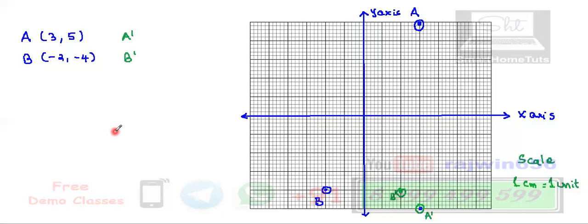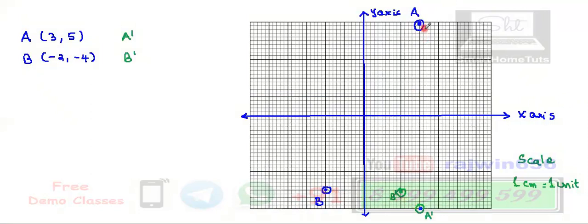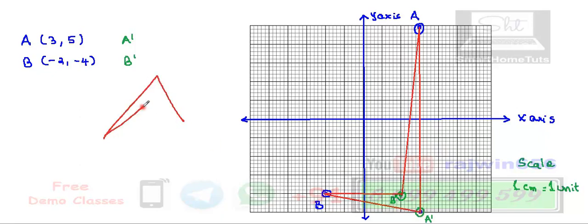Then we are supposed to join A, A dash, B, and B dash. I will join all of these points as mentioned in the question. Having joined the points A, A dash, B, and B dash, the kind of quadrilateral we are getting is a convex quadrilateral. This is the shape of a convex quadrilateral.